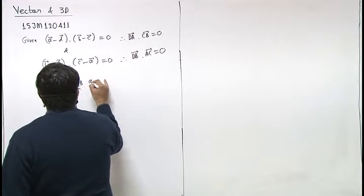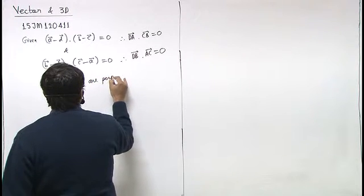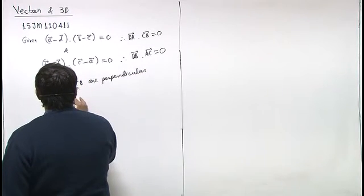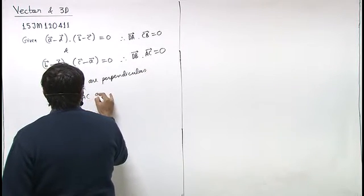DA and CB are perpendicular, and DB and AC are also perpendicular.